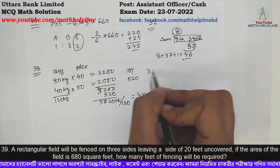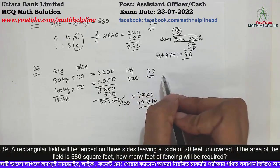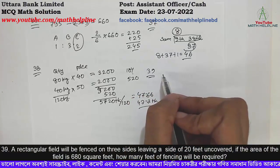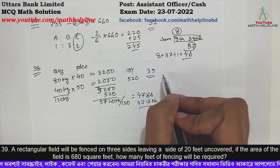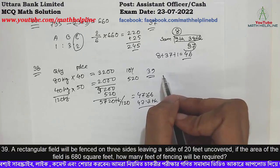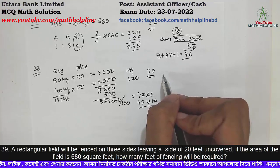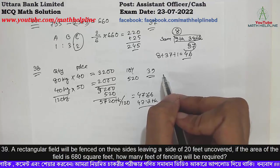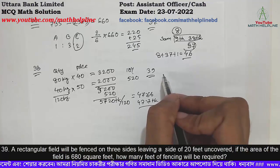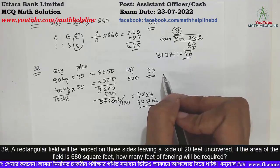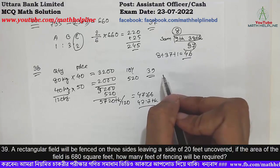Problem number 39: A rectangular field will be fenced on 3 sides leaving a side of 20 feet uncovered. If the area of the field is 680 square feet, how many feet of fencing will be required?